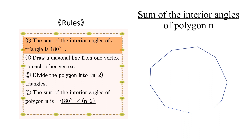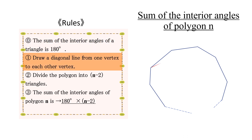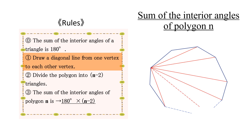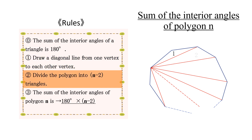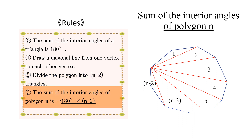The sum of the interior angles of a triangle is 180 degrees. Using this fact, let's find the sum of the interior angles of polygon N. See the figure on the right. First, draw a diagonal line from one vertex to each other vertex. This divides the polygon into N minus two triangles. Since the sum of the interior angles of a triangle is 180 degrees, the sum of the interior angles of polygon N is 180 times (N minus two).